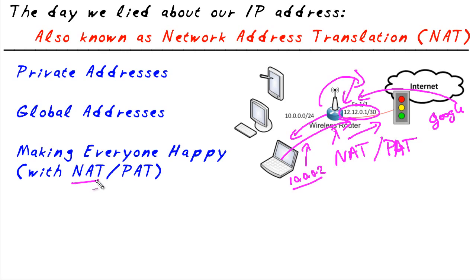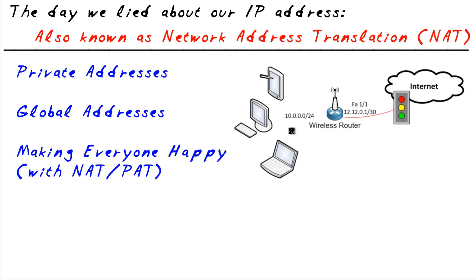Network address translation is when we do a one-to-one mapping — maybe each customer on the outside would get their own IP address. But in most cases we don't have three global addresses for three individual clients. So instead we just overload on a single address, and that's called PAT — Port Address Translation — and this device is tracking all the sessions.